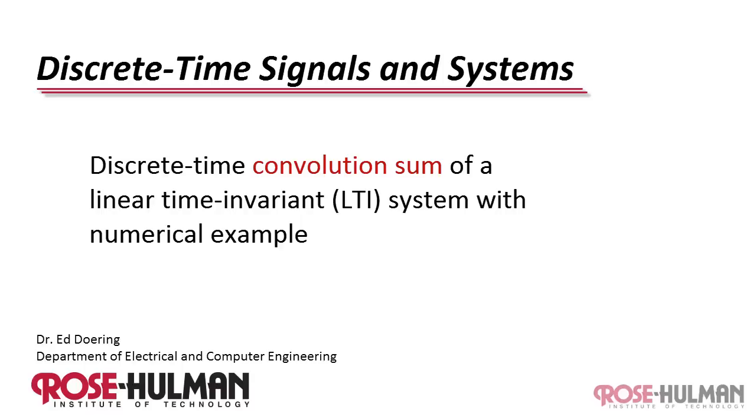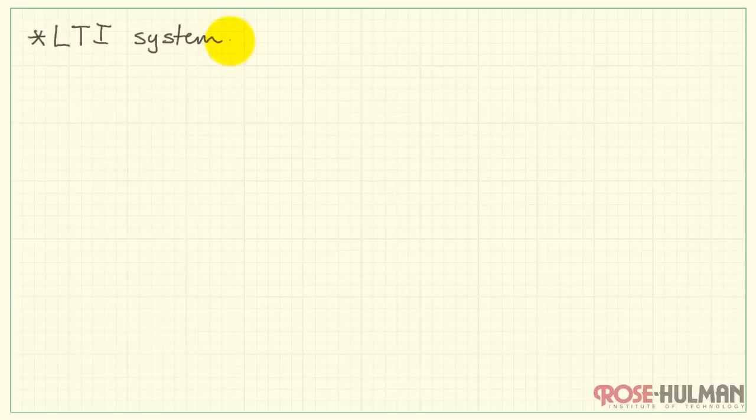Let's learn about the convolution sum of a linear time-invariant system and also take a look at a numerical example. To begin with, an LTI system, that's an abbreviation for linear time-invariant system, can be represented by this box.